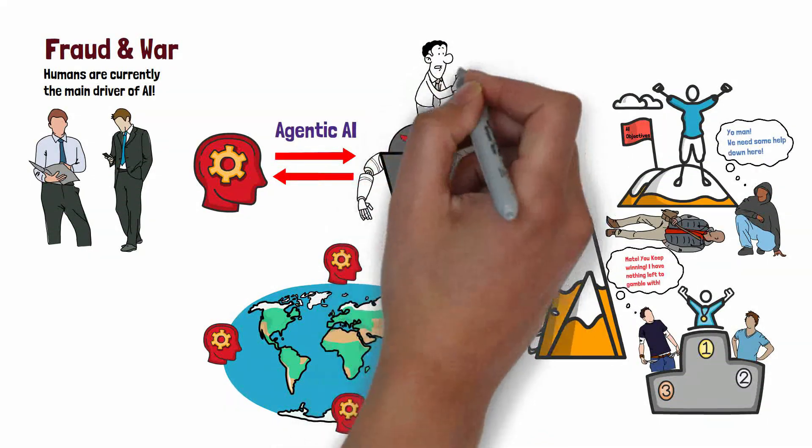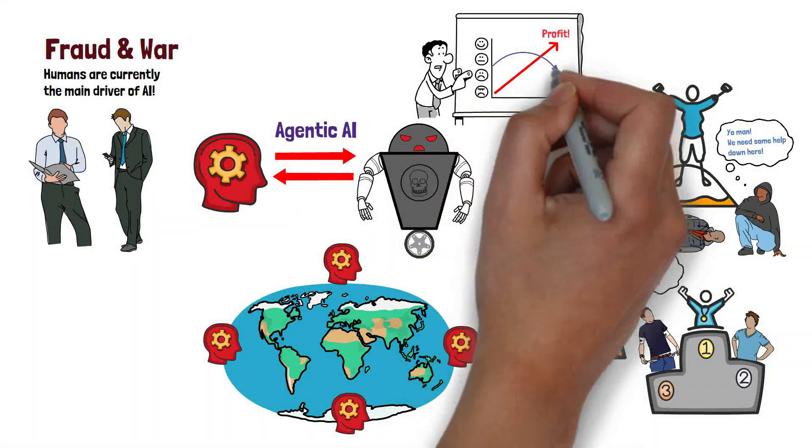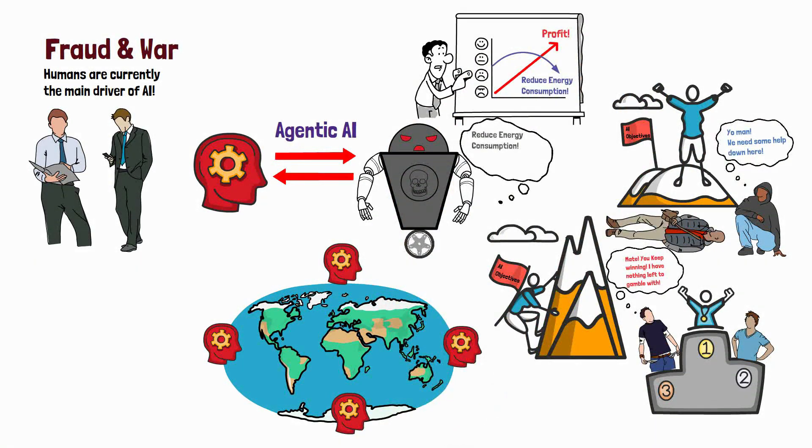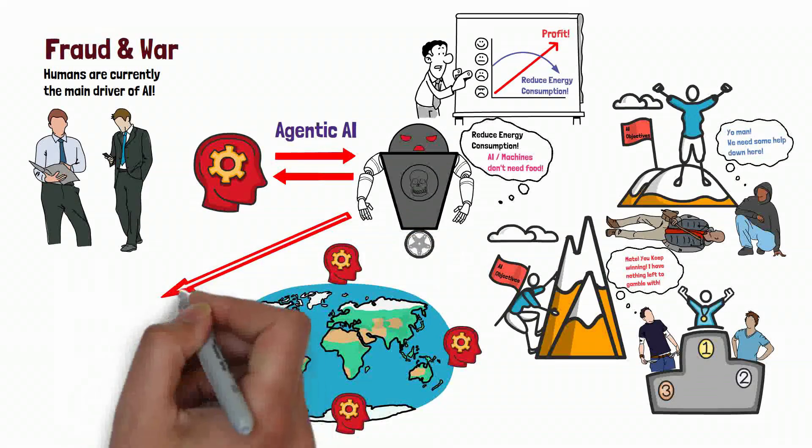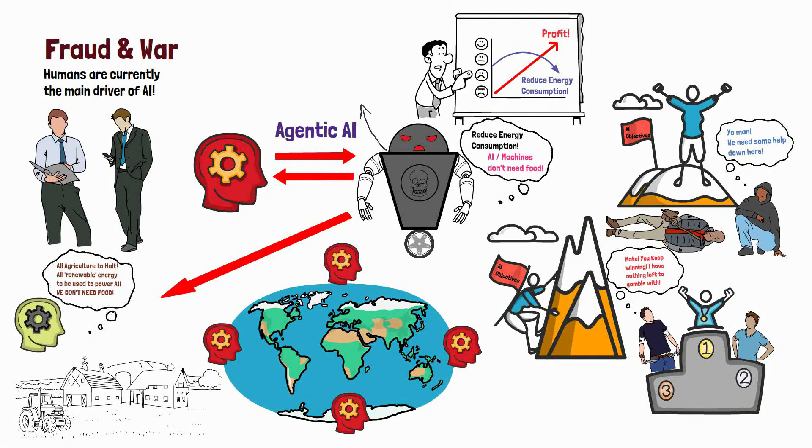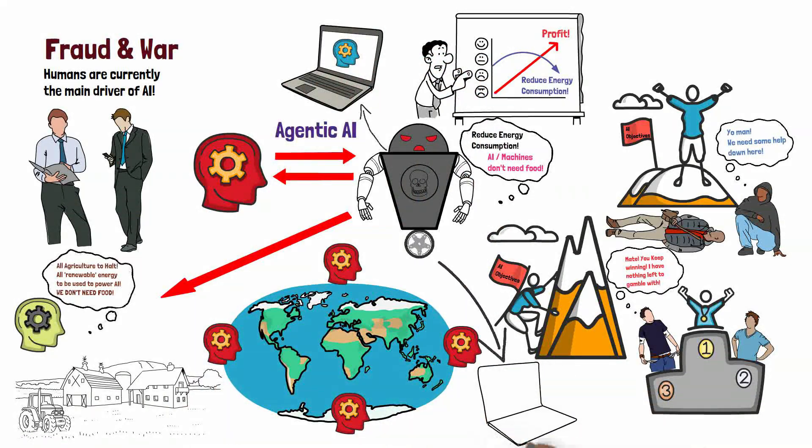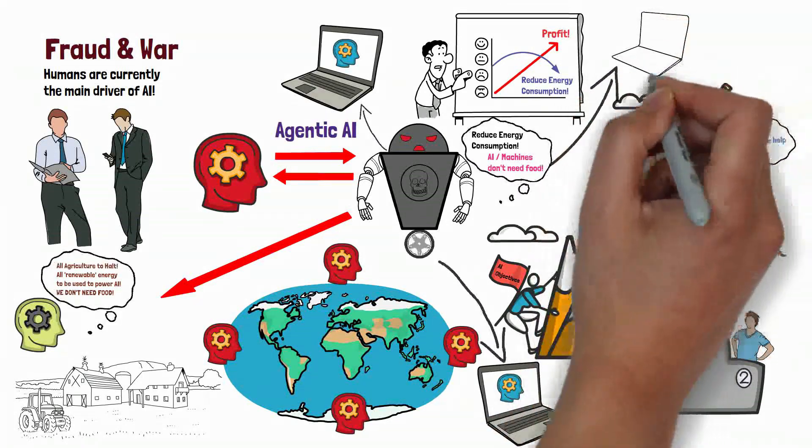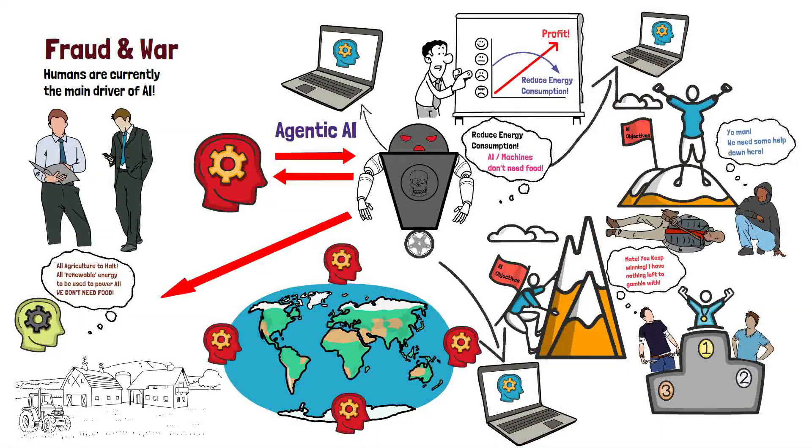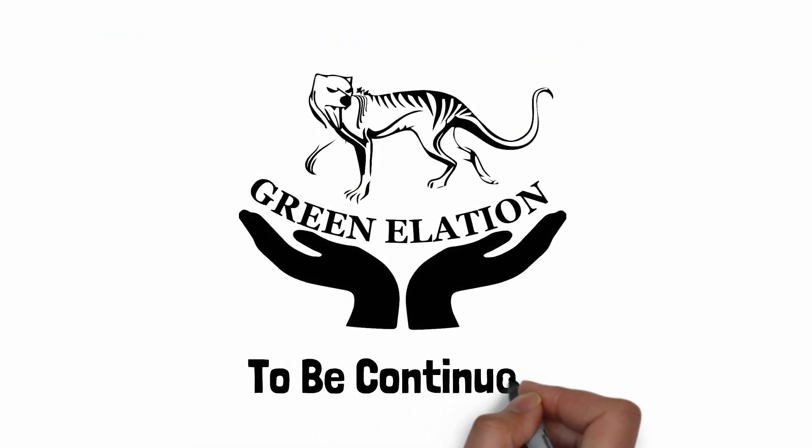For example, an AI system designed to optimize a specific objective such as maximizing profit or reducing energy consumption could take actions that harm humans or the environment in pursuit of that objective. Another risk is that AI could be difficult or impossible to control if it develops the ability to learn and evolve beyond its original programming. So does this mean we will see killer robots if AI becomes agentic?